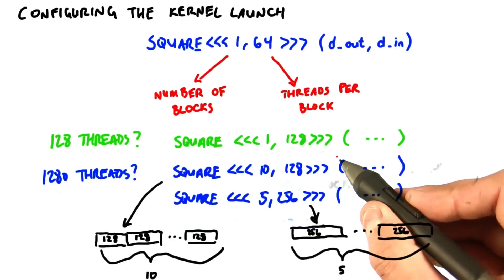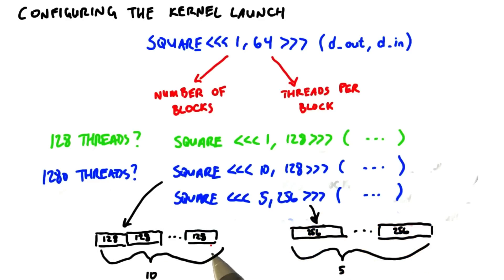Now, how do these kernels actually map into threads and blocks? Well, when we square 10,128, we're going to launch 10 thread blocks of 128 threads each. When we square 5,256, we'll launch 5 consecutive thread blocks of 256 threads each.